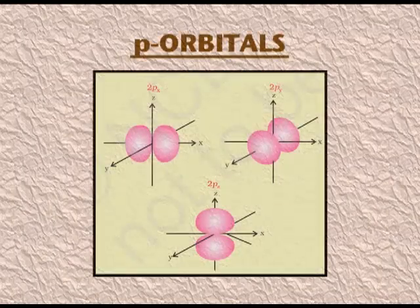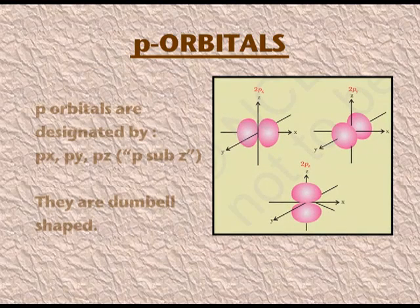I will discuss it later when I explain the quantum numbers. There are three types of p orbitals as per their orientations along the x-axis, y-axis, and z-axis. The p orbitals are designated as px, py, and pz. The p orbitals are dumbbell shaped.